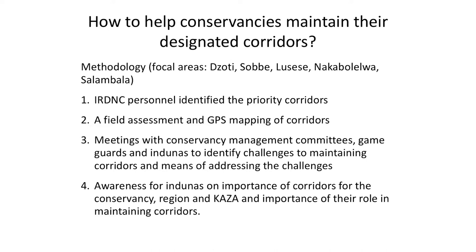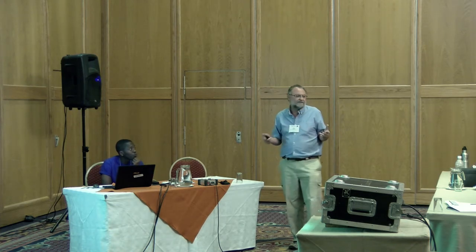We were looking at how to help the conservancies actually implement their own land use planning and zonation — in particular, how to help them maintain their designated corridors. We've been developing a methodology for working with communities. Key parts of the methodology include meeting with the conservancy management committees, game guards, and traditional leaders for them to identify the main challenges in maintaining corridors, and working with the traditional leaders and headmen on the importance of the corridors and their role, because they allocate land.